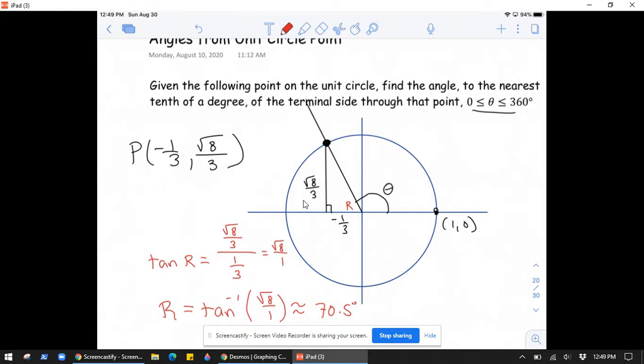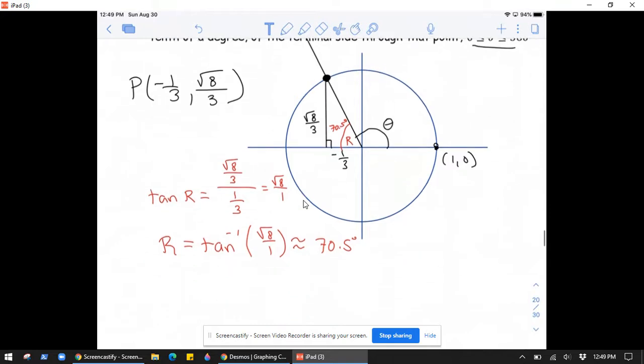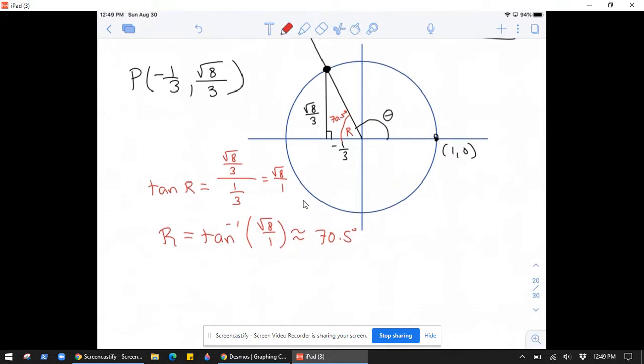So angle r, I'm just going to write it in there, 70.5 degrees. Angle theta, therefore, is the one we want. Since we can see clearly that angle theta plus angle r, which is 70.5 degrees, must give you 180. That tells us that theta is 180 degrees minus 70.5 degrees, which is 180 minus 70 is 110, minus a half is 109.5 degrees.